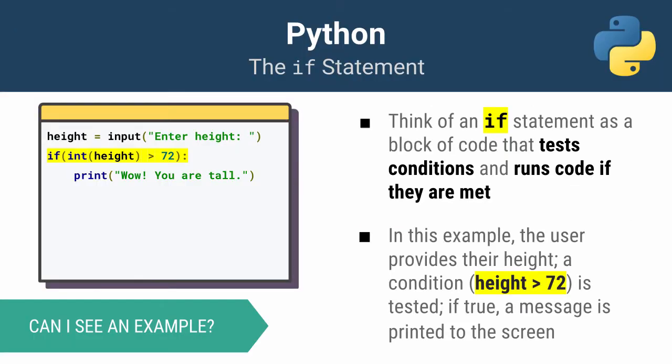Here is the program I just laid out. I have a variable called height and I ask the user to enter theirs. Once I have it I have a simple if statement — the if keyword, a condition whether the height is greater than 72, followed by a colon, and then an indented statement block that will print 'Wow, you are tall' — but only if the condition evaluates to true.